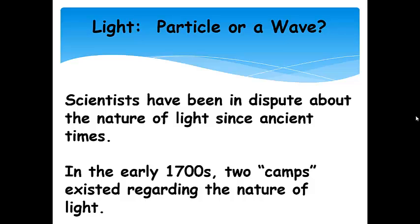Scientists have been arguing about this since ancient times. So there has been a long-standing dispute. And in the early 1700s, two camps existed regarding the nature of light.